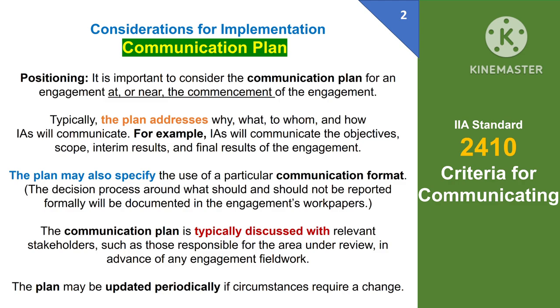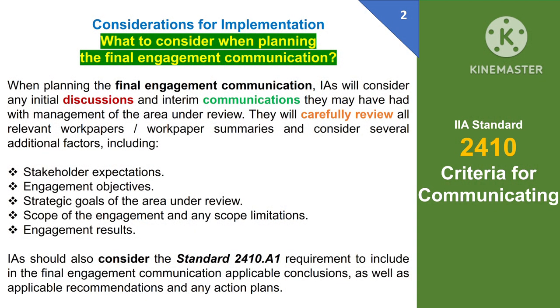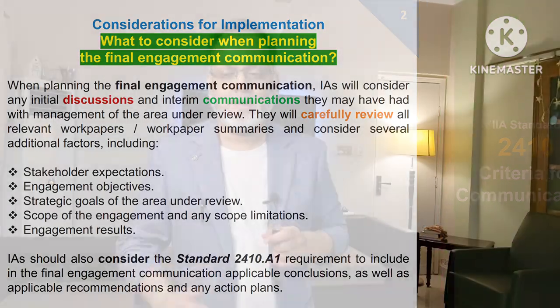The decision process around what should and shouldn't be reported formally will be documented in the engagement's work papers. The communication plan is typically discussed with relevant stakeholders, such as those responsible for the area under review, in advance of engagement fieldwork. The plan may be updated periodically if circumstances require a change. When planning the final engagement communication, internal auditors will consider any initial discussions and interim communications they may have had with management, carefully review all relevant work papers, and consider stakeholder expectations, engagement objectives, strategic goals of the area, scope of the engagement, any scope limitations, and engagement results.